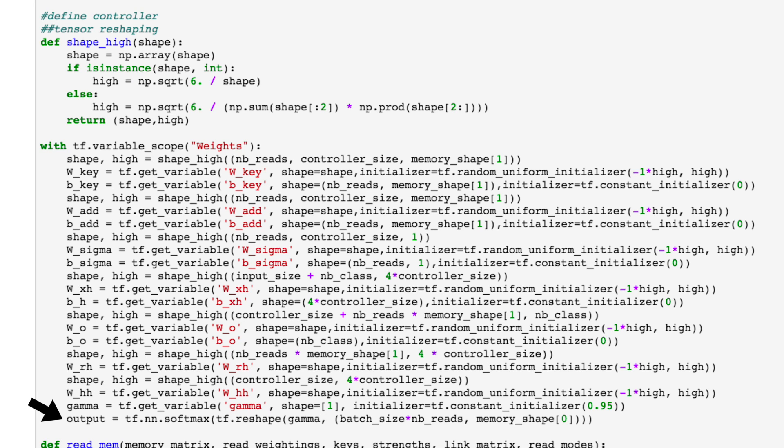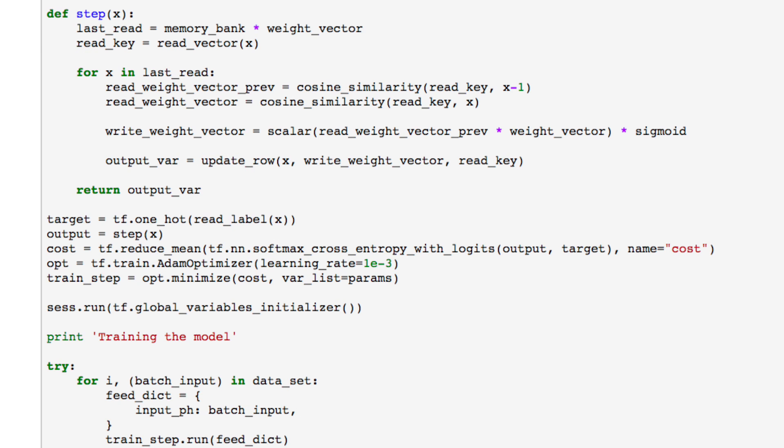We can define the interaction that happens between both components under the step function, which is called every time step during training. Just like with a regular NTM, we read a vector from memory that is a linear combination of its rows scaled by a normalized weight vector.